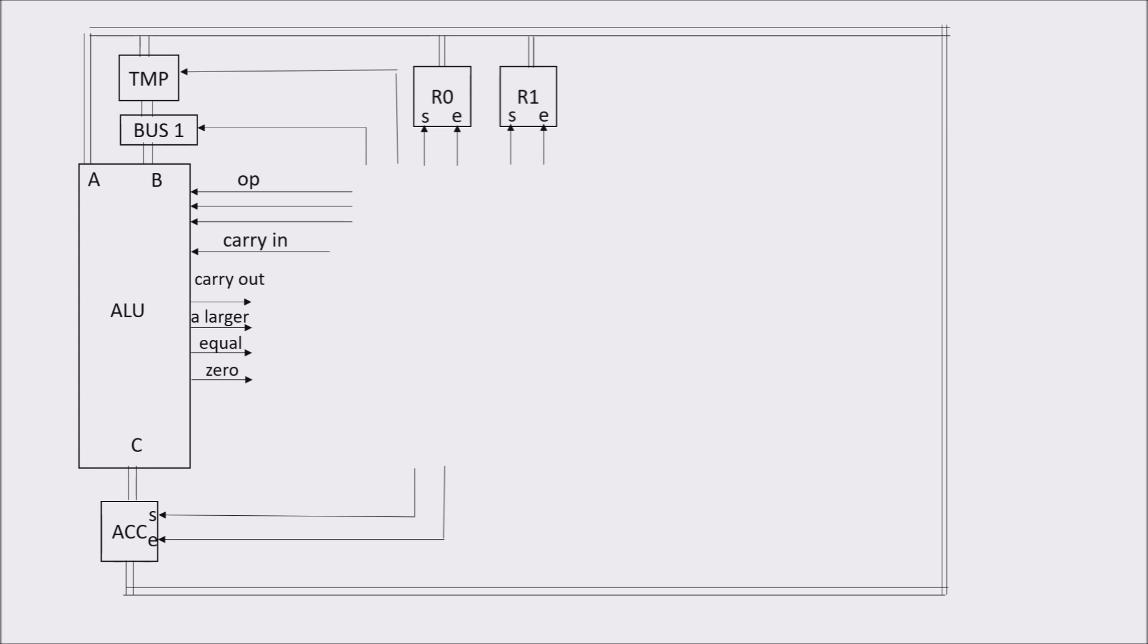For example, we imagine having the number 4 in R0 and the number 3 in R1. We want to add R0 to R1 and put the result in R1. So, first, we put the right code in op lines. Secondly, we move the R1 one byte in TMP. Third, we put R0 in A input. Immediately, we have the result on output C. Remember, the ALU is a combinational circuit. And we give a set pulse to store it in the accumulator register. Finally, we store the number 7 in register R1.